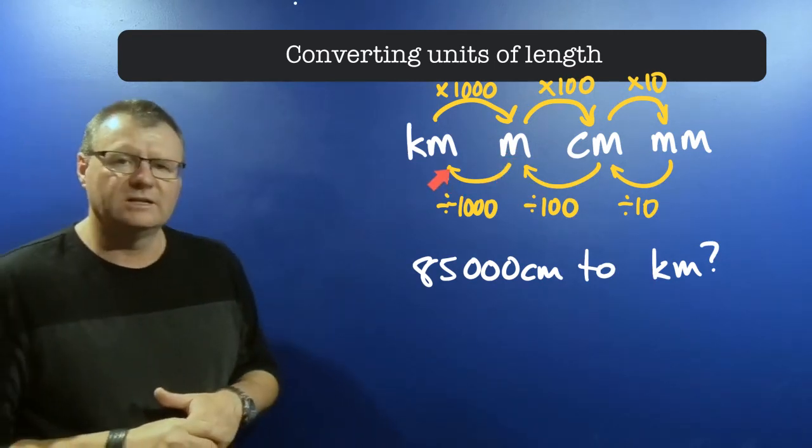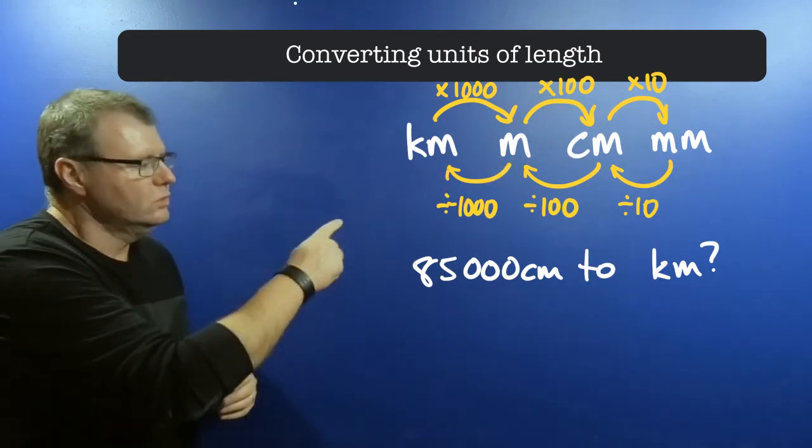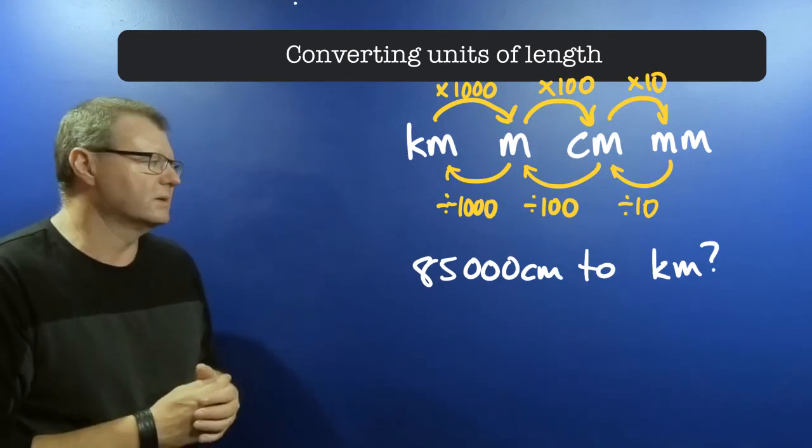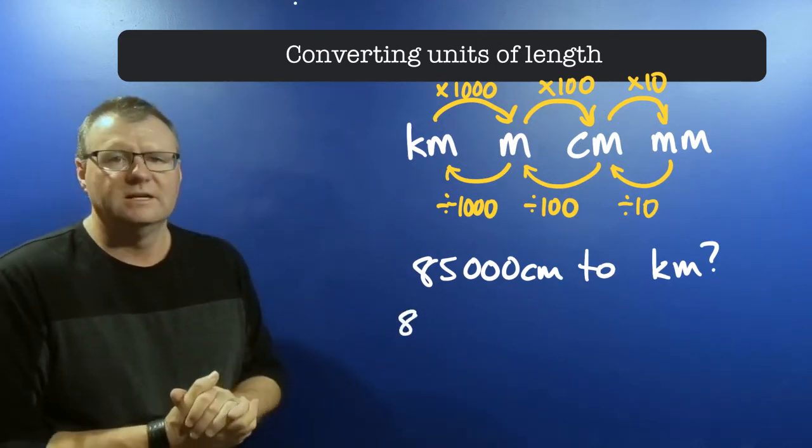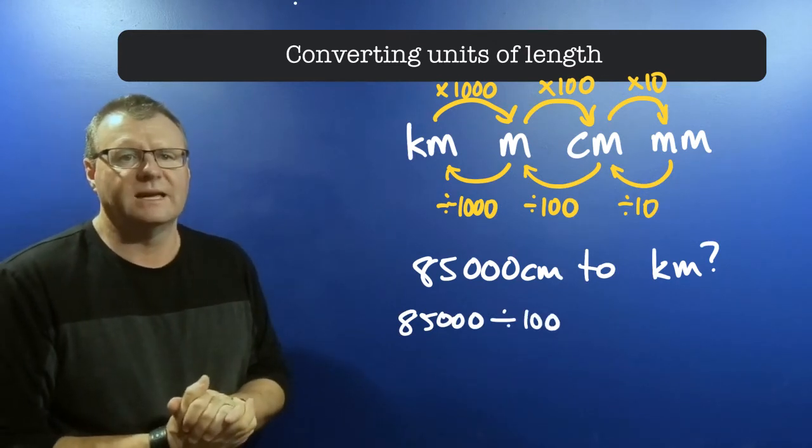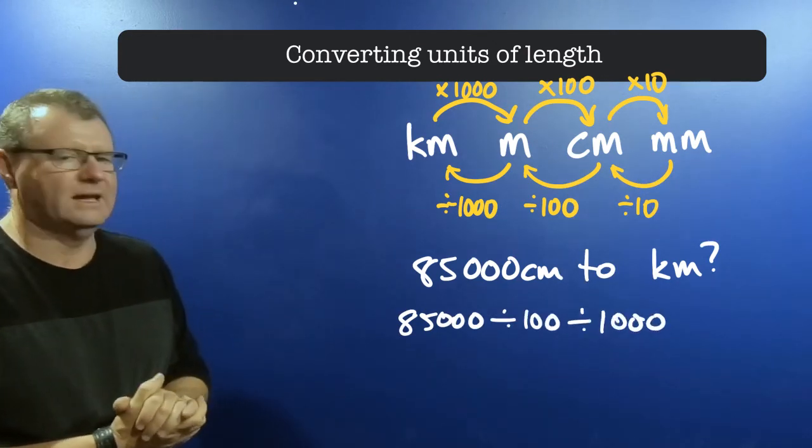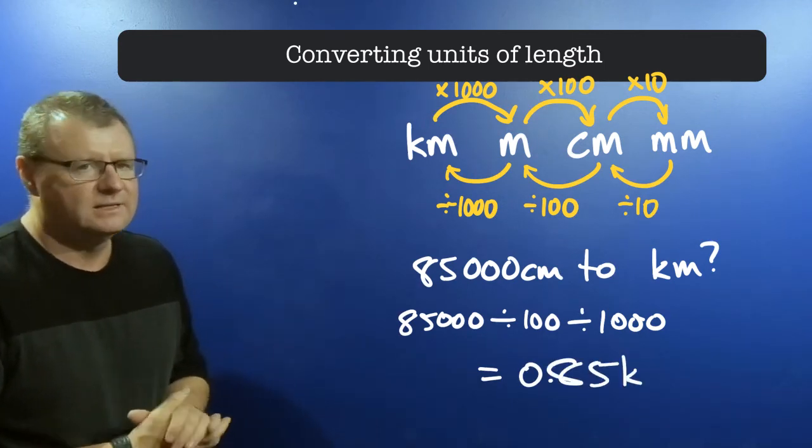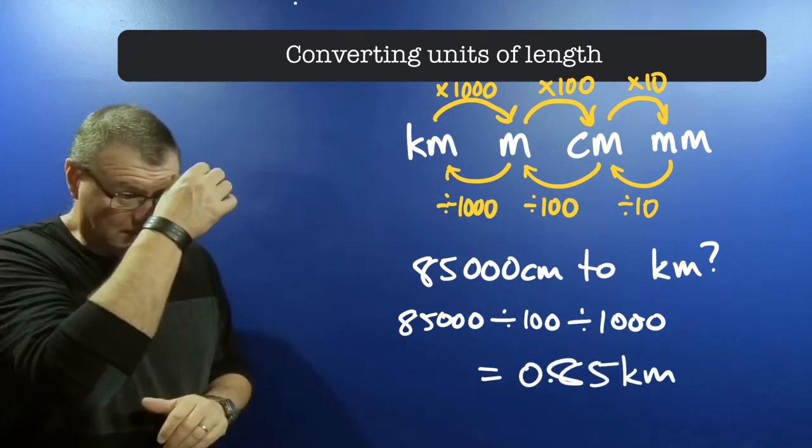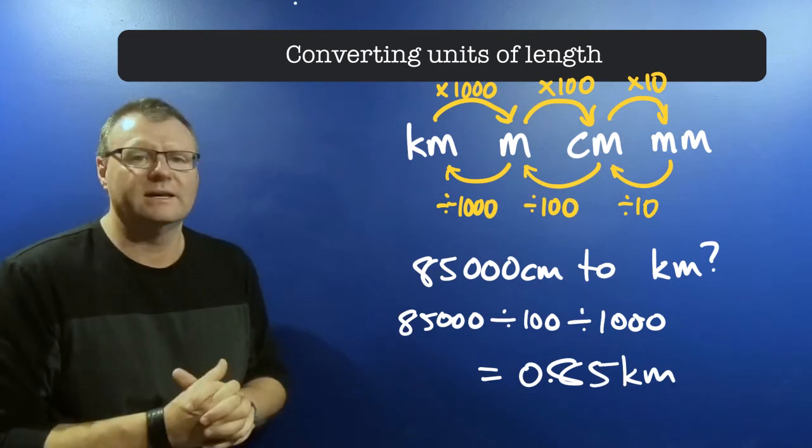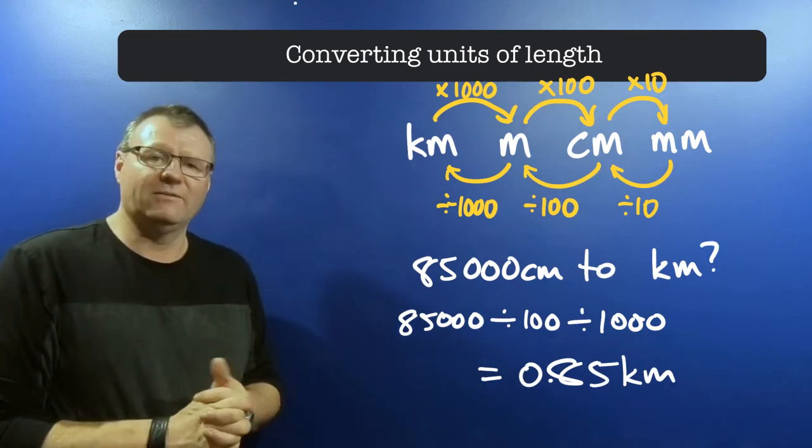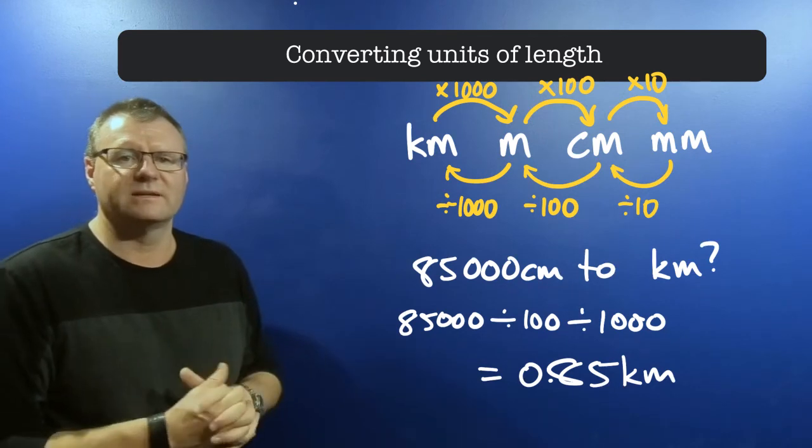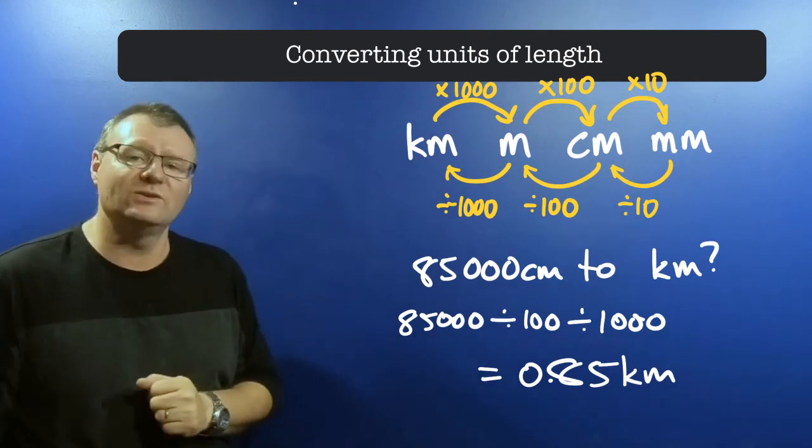I do those two steps individually. I start with my 85,000 divided by 100, divided by 1,000, and I get 0.85 kilometers. You could do that in your head, but if you're not sure, just use your calculator. So 0.85 kilometers is the same thing as 85,000 centimeters. That's how we convert between units of length.